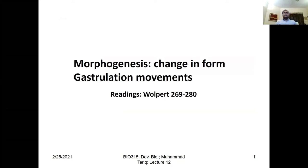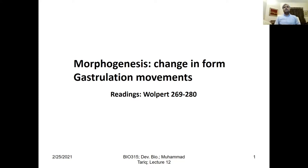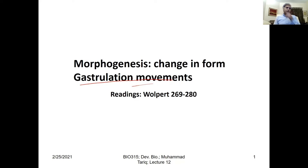Today we are going to start learning about morphogenesis. Morphogenesis is basically all about creation of order in early developmental stages. The embryo at early embryonic development is a two-dimensional structure, and after morphogenesis, which involves gastrulation movements, the embryo becomes a 3D structure. In simple terms, we define morphogenesis as change in form.